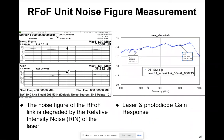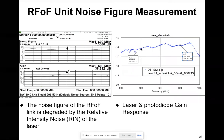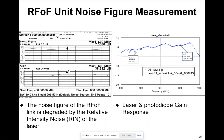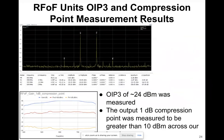If you do the calculation — accounting for DC modulation gain of the laser and RF efficiency of the photodiode — you end up with a loss of around 30 dB. If you have an amplifier installed with a gain of around 18 dB, you would get the result shown.